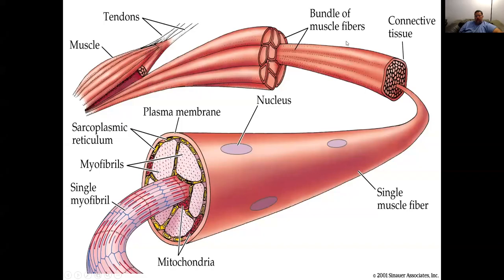We're going to resume with our lecture on skeletal muscle contraction. At our first lecture, I talked about the three different major muscle types: skeletal muscle, cardiac muscle, and smooth muscle. Now I'm going to discuss how skeletal muscle contracts. This will be a quick recap of the anatomy of skeletal muscle, and then we'll get into how the contraction occurs.